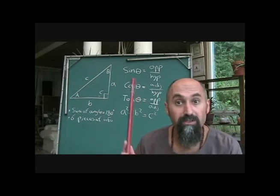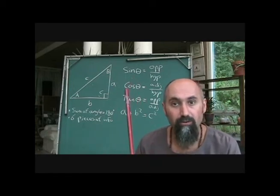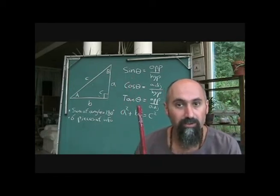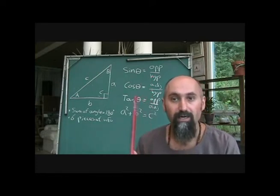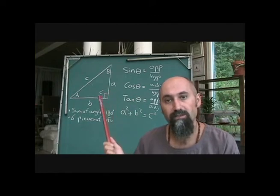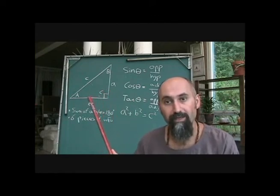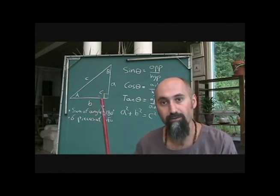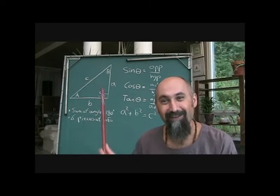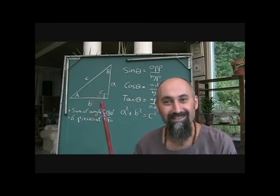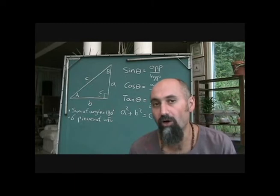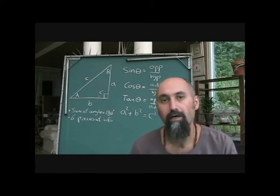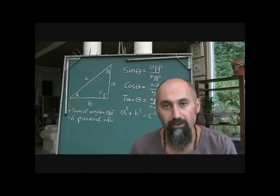This is very important because when you're dealing with sine, cosine, and tangent, that's what they refer to when they say opposite, adjacent, or hypotenuse. The hypotenuse is always across from the 90 degree angle.